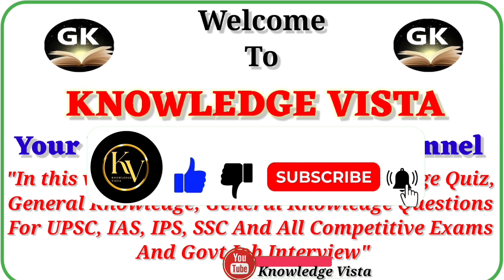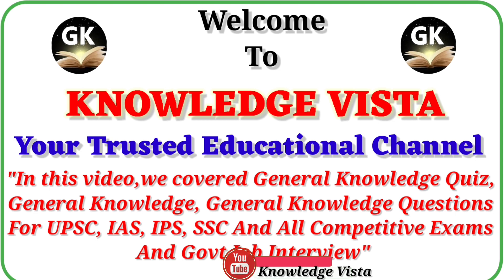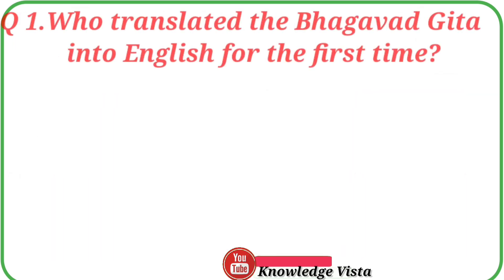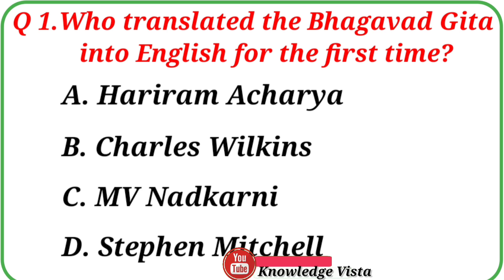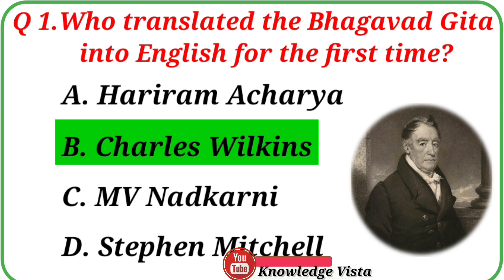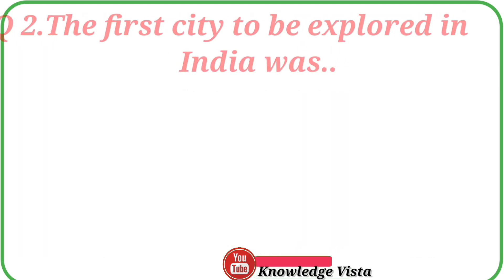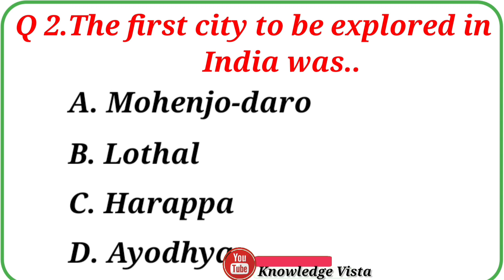Now let's start this video. Question number one: Who translated the Bhagavad Gita into English for the first time? Your options are: A. Hariram Acharya, B. Charles Wilkins, C. MV Nadkarni, D. Stephen Mitchell. Correct answer is option B, Charles Wilkins.